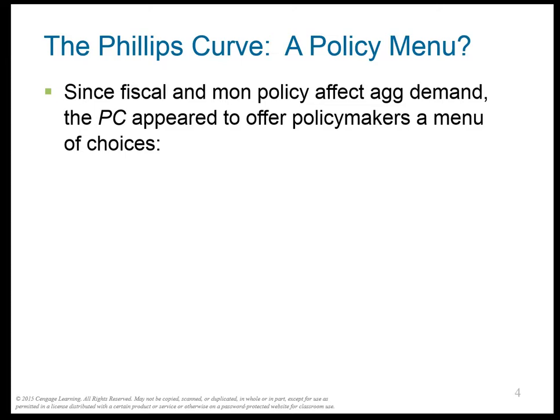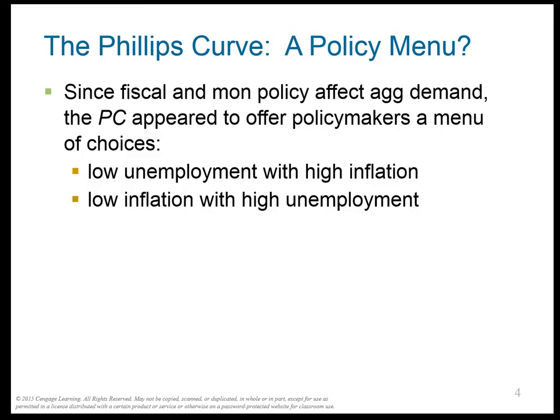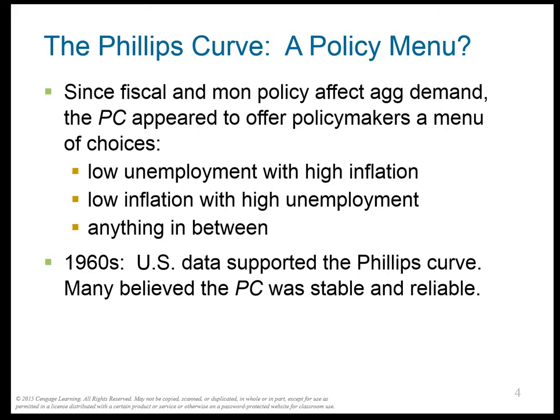When this was discovered in the 1960s, people thought policymakers had a couple of choices: low unemployment with high inflation, low inflation with high unemployment, or anything in between. Why did policymakers have the ability to control this? Because policymakers can change the AD curve — either with monetary policy, meaning the Fed pumps money into the economy, or with fiscal policy, meaning the government increases government spending.